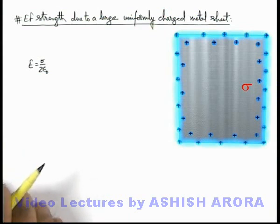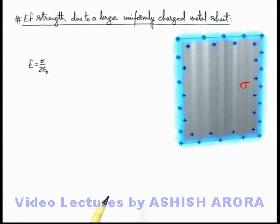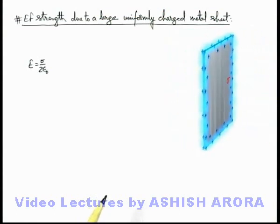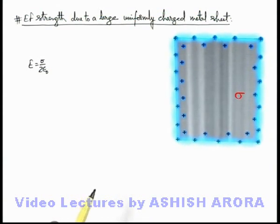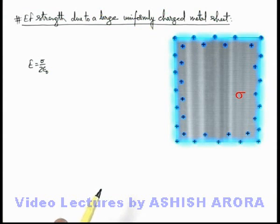Now you can see the other view of this sheet. On the rear side of this metal sheet, on the back surface or rear surface, the surface charge density distributed is also sigma.